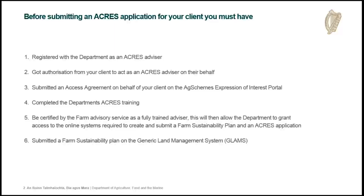If you are a new advisor, you will need to go to online services to get a username so that you can access the AgFood portal for submitting your application. If you're already an advisor for other schemes like BPS and GLOSS, you already have your login details for the AgFood screens. But if you're a new advisor and haven't had any dealings with the department before, you will need to contact online services to get a username.